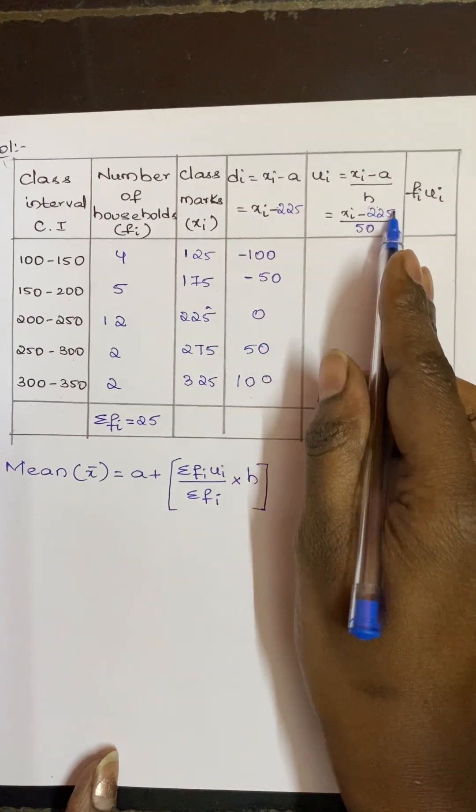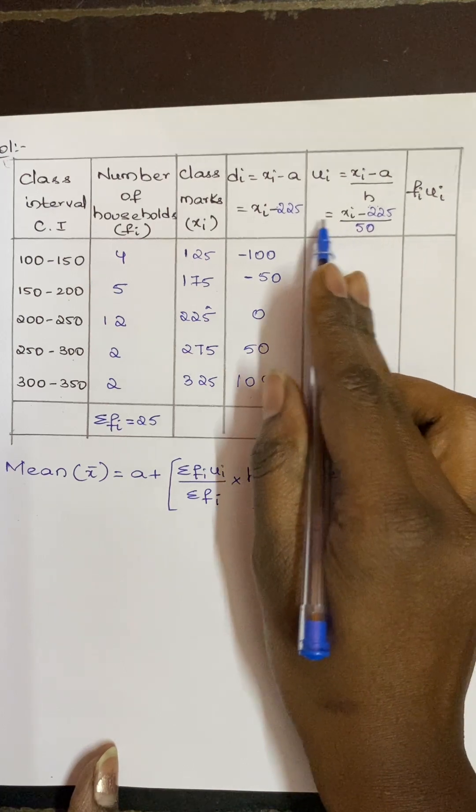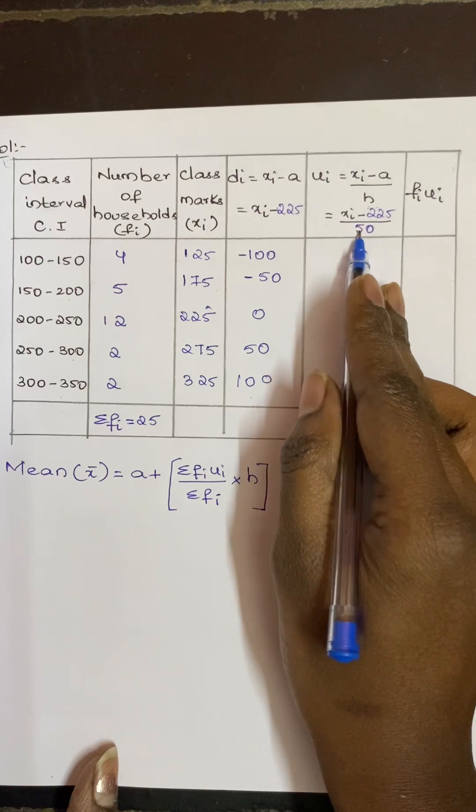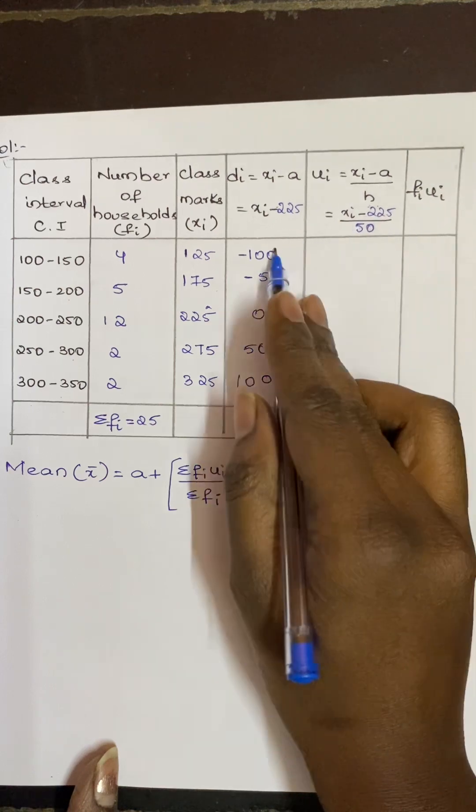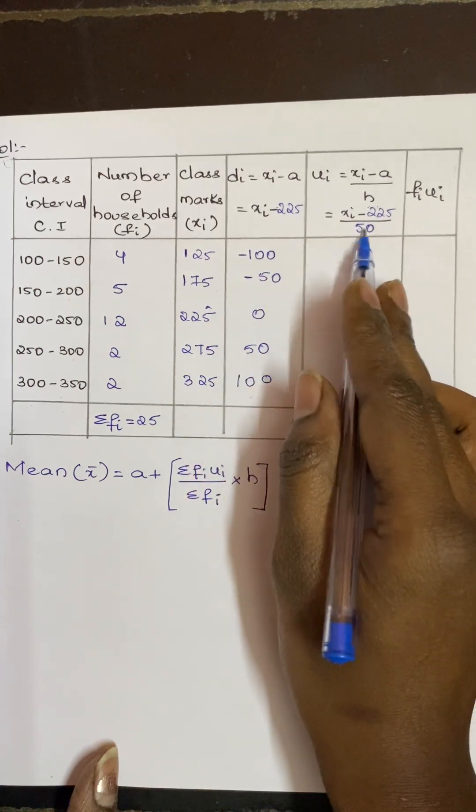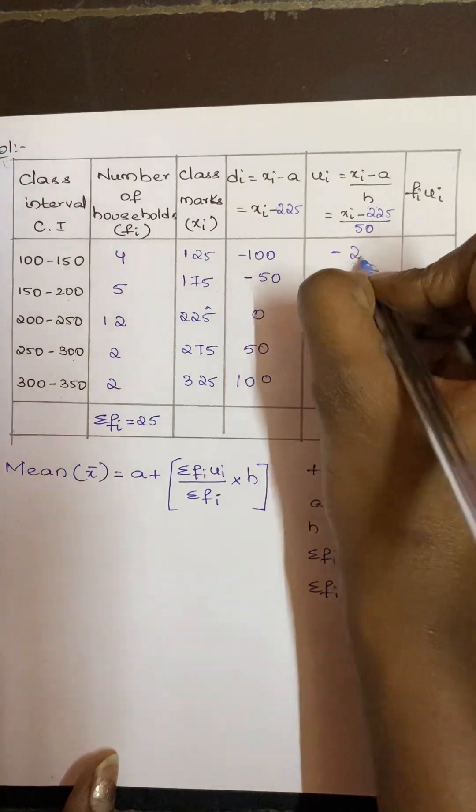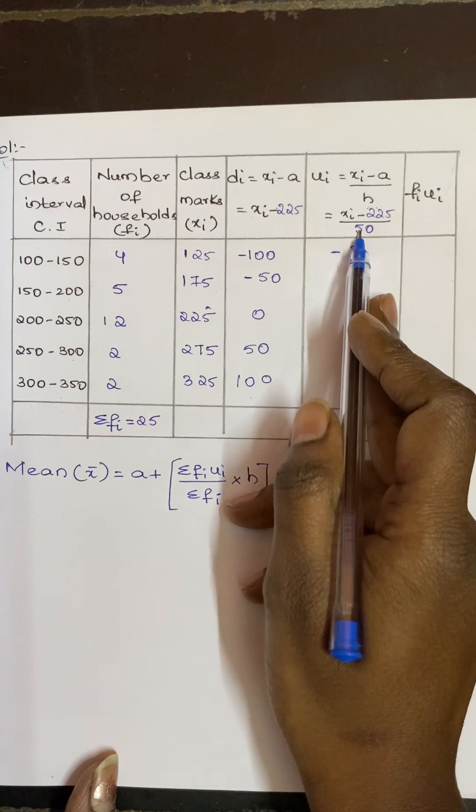So (xi - 225)/50. So what is the first xi value? 125. 125 minus 225 by 50, that becomes minus 100 by 50, which is minus 2. Next, minus 50 by 50 is minus 1. This becomes 0, and here it becomes 1, here it becomes 2.